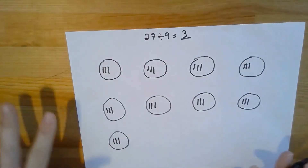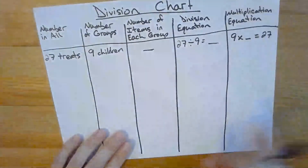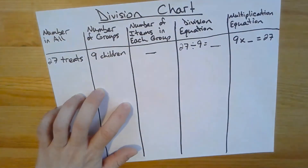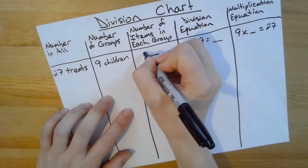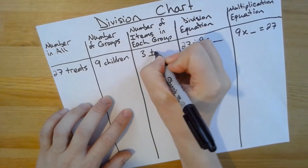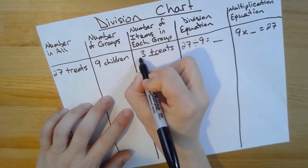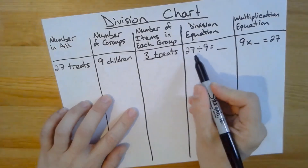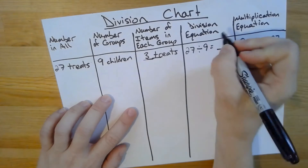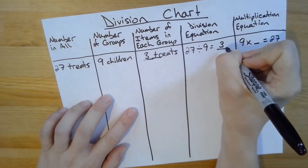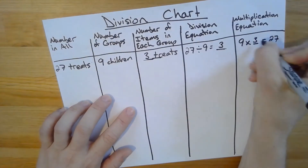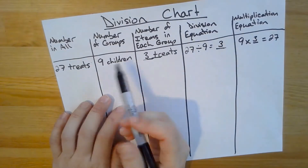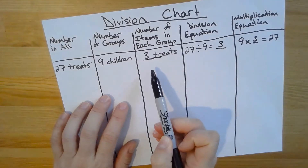I know the answer to this division problem is three, and now I can finish filling out my division chart. That number three will complete all the blanks in my chart. So I have 27 treats that I split equally between nine children, which gave them each three treats. That means my division problem is 27 divided by nine equals three. And what do you think my multiplication problem will be? If you said nine times three, you're correct. So nine times three equals 27, because nine groups times three in each group will equal 27.